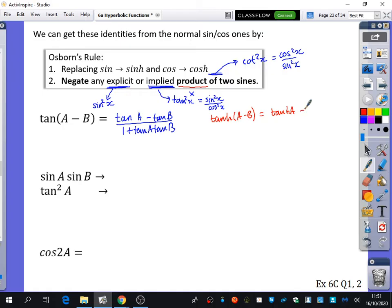Minus. Stays as a minus because there's nothing, there's no product of two things in there. So it's going to be tanh of A minus tanh of B, all divided by 1 minus tanh A tanh B. Okay?